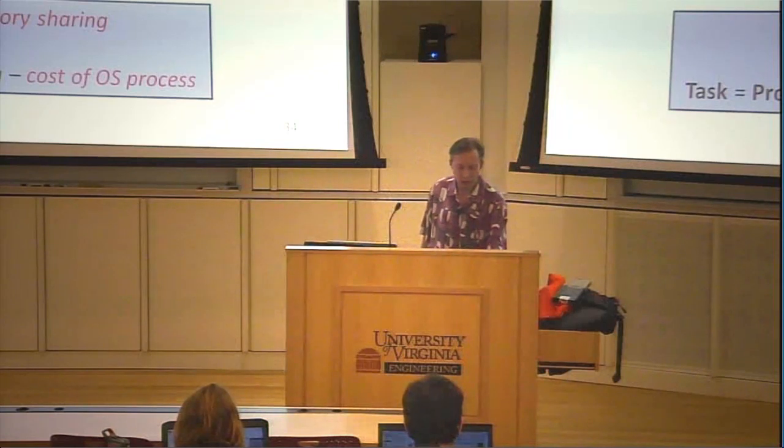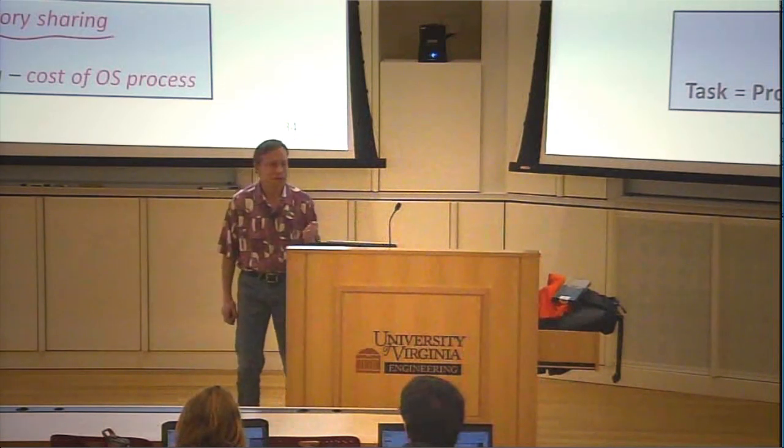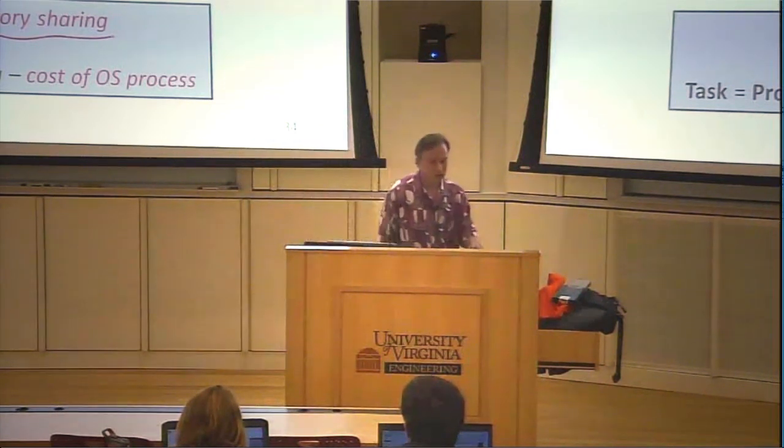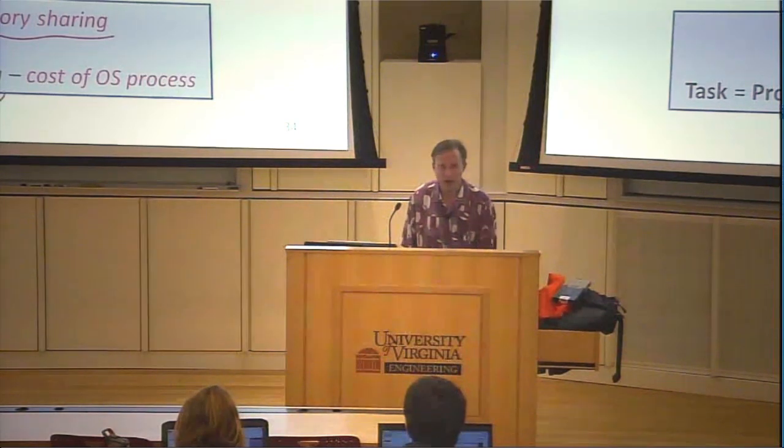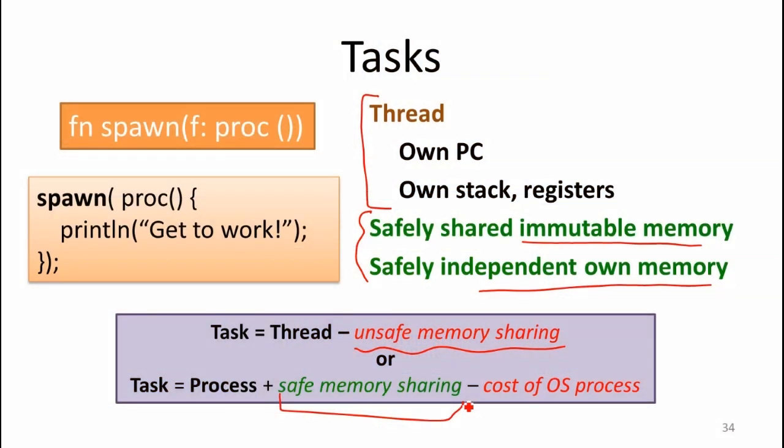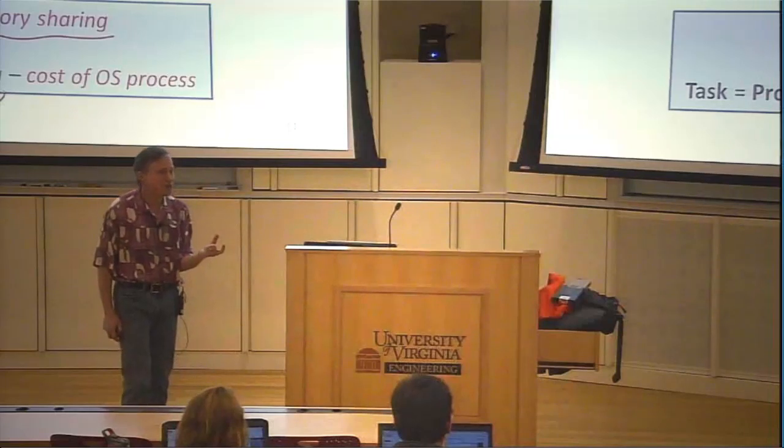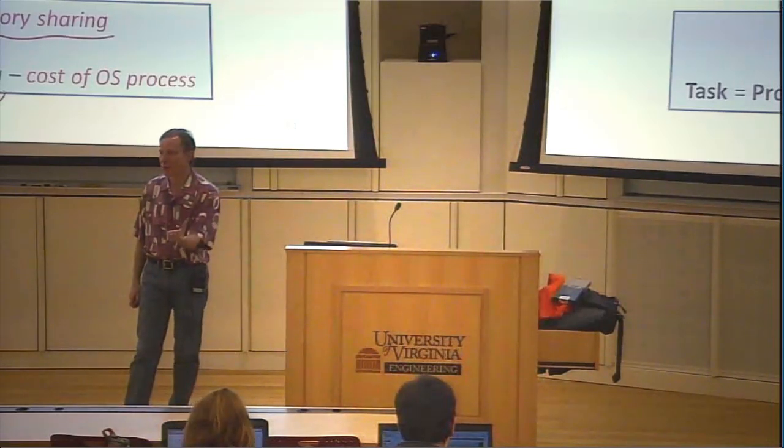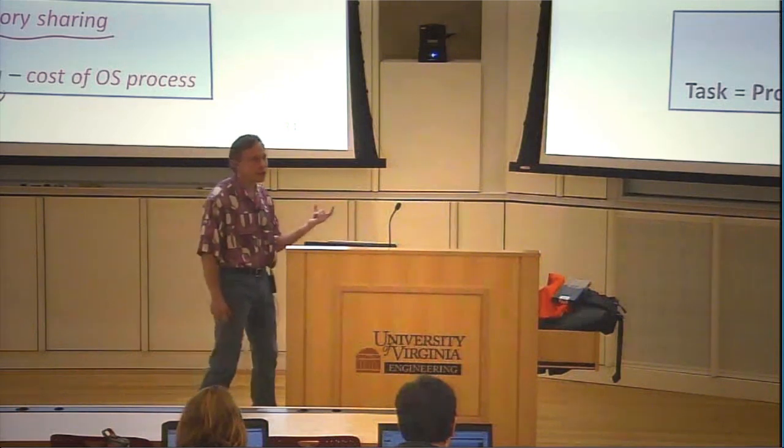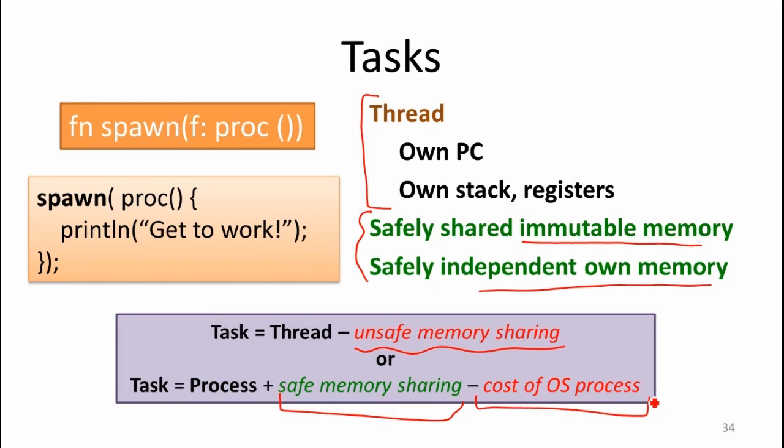You can think of it either way. You can think of it as a thread, except for we get rid of the unsafe memory sharing that threads have. Or you can think of it as a process, except for we add a way to share memory that has much lower cost than sharing memory across processes. And there are ways to share memory across processes. What's an easy way to share memory between processes? So there's no rule that a page can't be visible to more than one process. So you can have a page that is in the page table, visible to more than one process. And they're sharing that memory and there's no restrictions on it. But that's not safe. And a task in Rust doesn't require any of the costs associated with an operating system process. It doesn't require setting up a separate memory space.